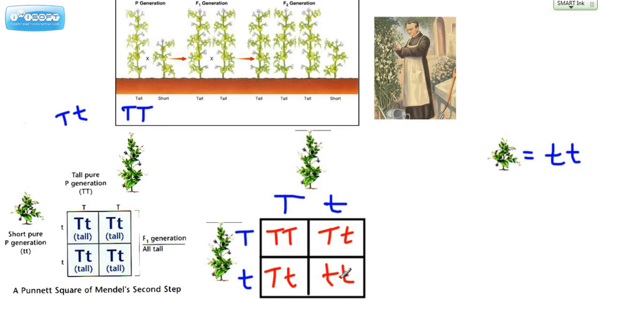Now, when we talk about the actual phenotypes, this would be a tall plant. It would look just like this, and so would this one, and so would this one. However, this plant would be short. It would look like this. Now, that's consistent with what we see here.